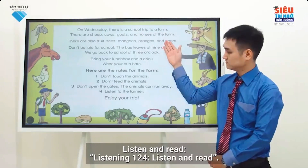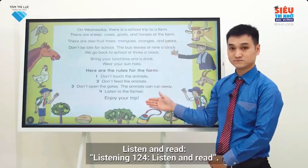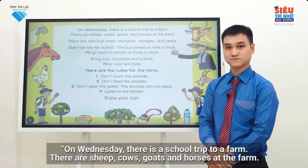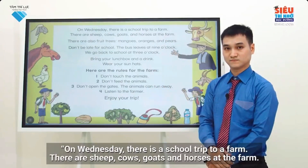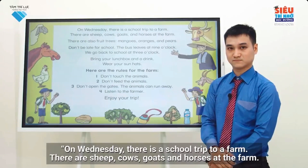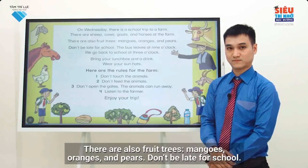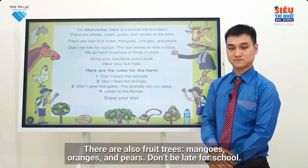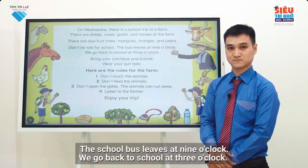Listen and read: On Wednesday there is a school trip to a farm. There are sheep, cows, goats, and horses at the farm. There are also fruit trees — mangoes, oranges, and pears. Don't be late for school — the bus leaves at nine o'clock.